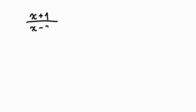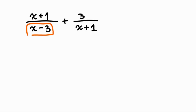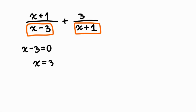Say you want to add two rational expressions: x plus 1 over x minus 3, plus 3 over x plus 1. You need to look at each expression and decide which value of the variable will make the denominator 0. For x minus 3, you can set x minus 3 equal to 0 and solve: x equals 3. Since we want a restriction, x cannot equal 3.